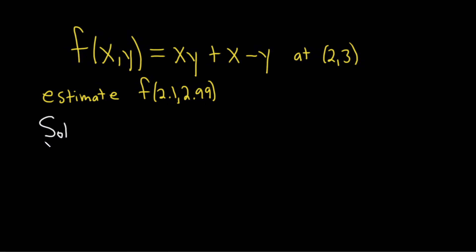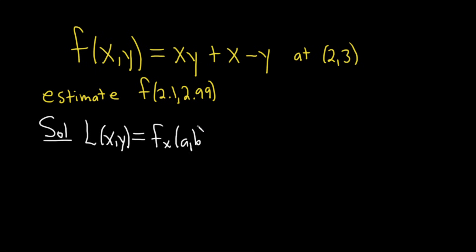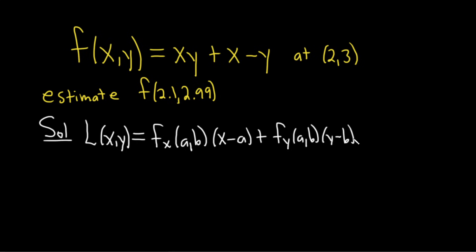Solution. The formula for the linear approximation — I'll call it big L of x,y — is equal to the following: it's the partial with respect to x at our point, which I'll call (a,b), times x minus a, plus the partial with respect to y at our point (a,b), times y minus b, plus f of (a,b).